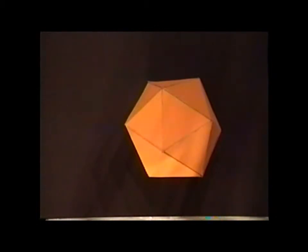The icosahedron is one of the five platonic solids, along with the tetrahedron, the cube, the octahedron, and the dodecahedron.